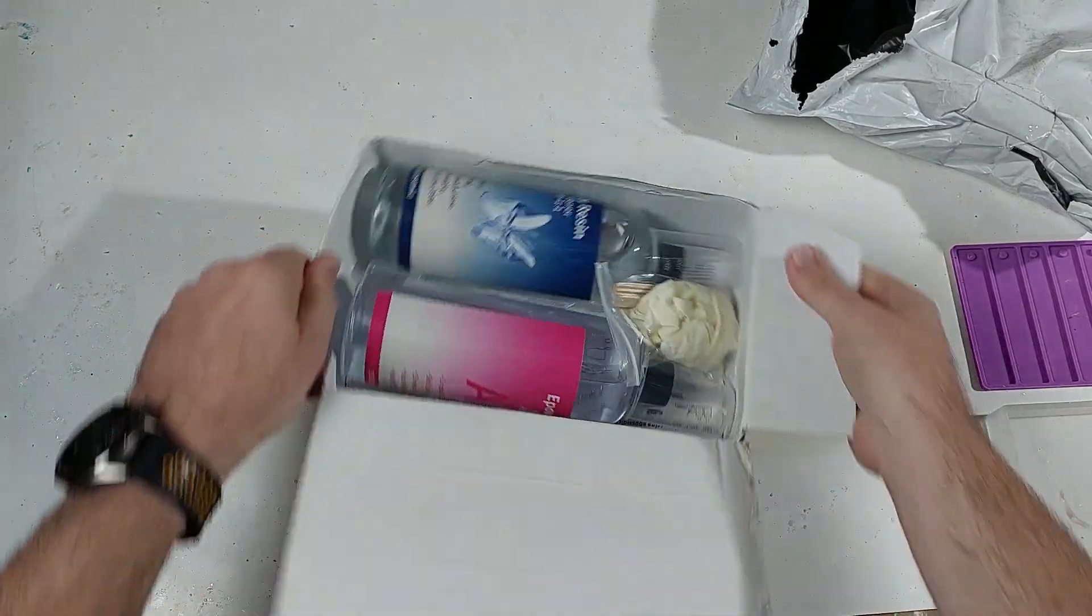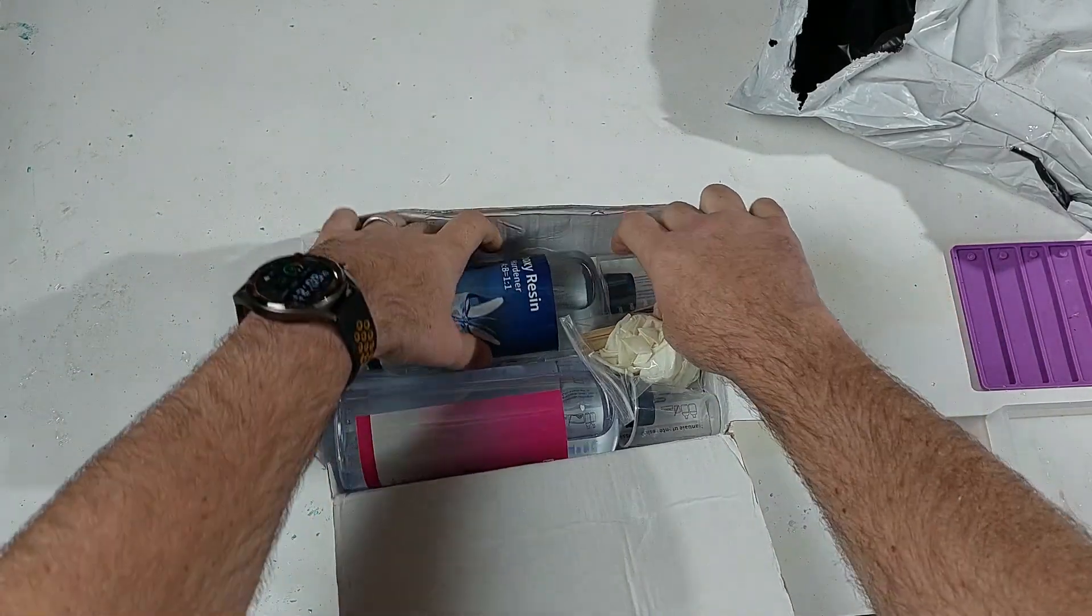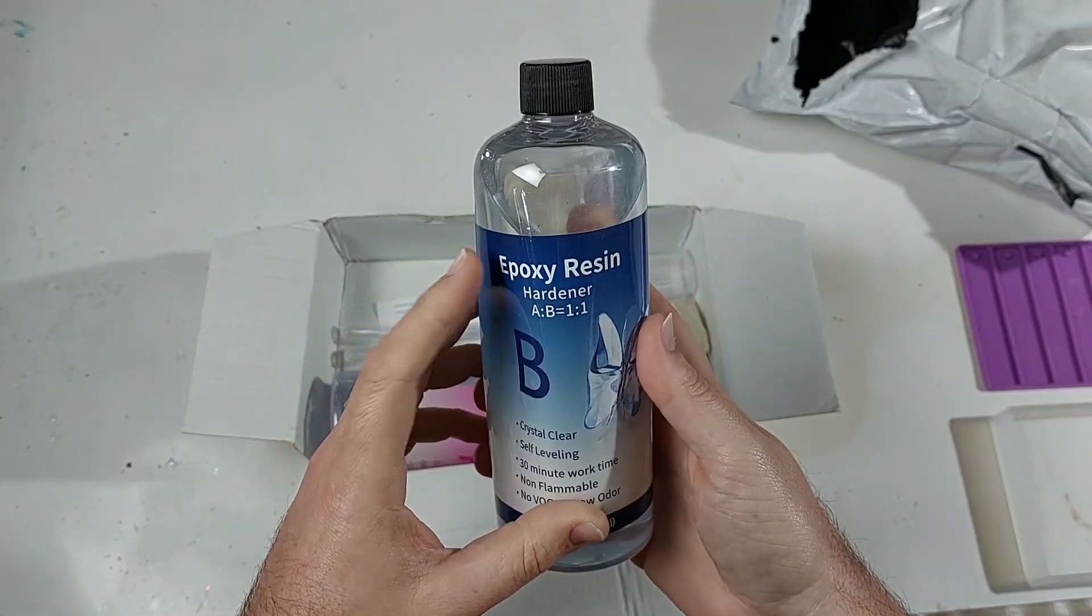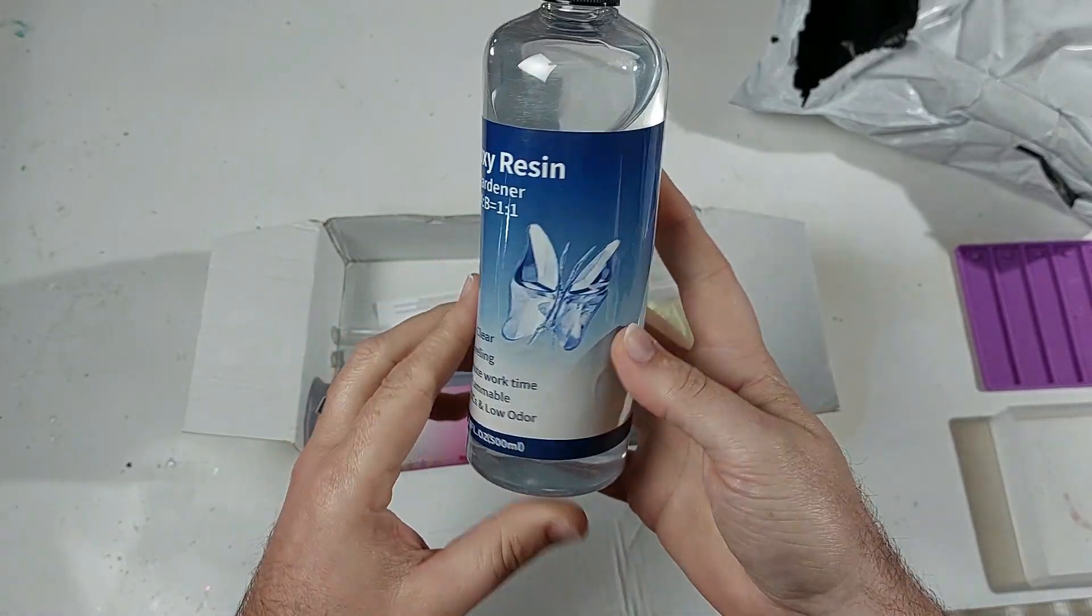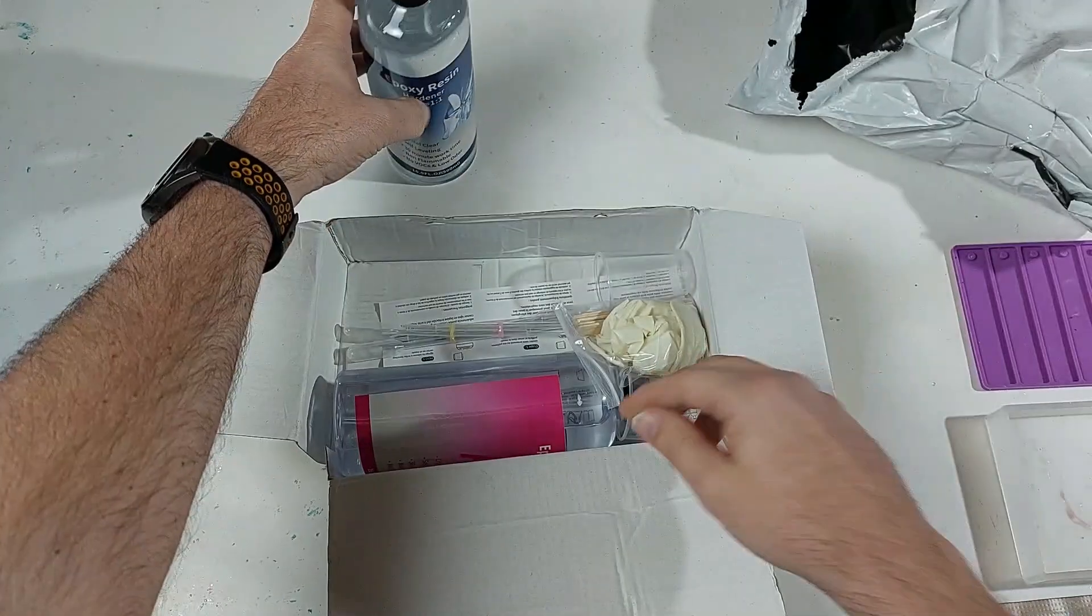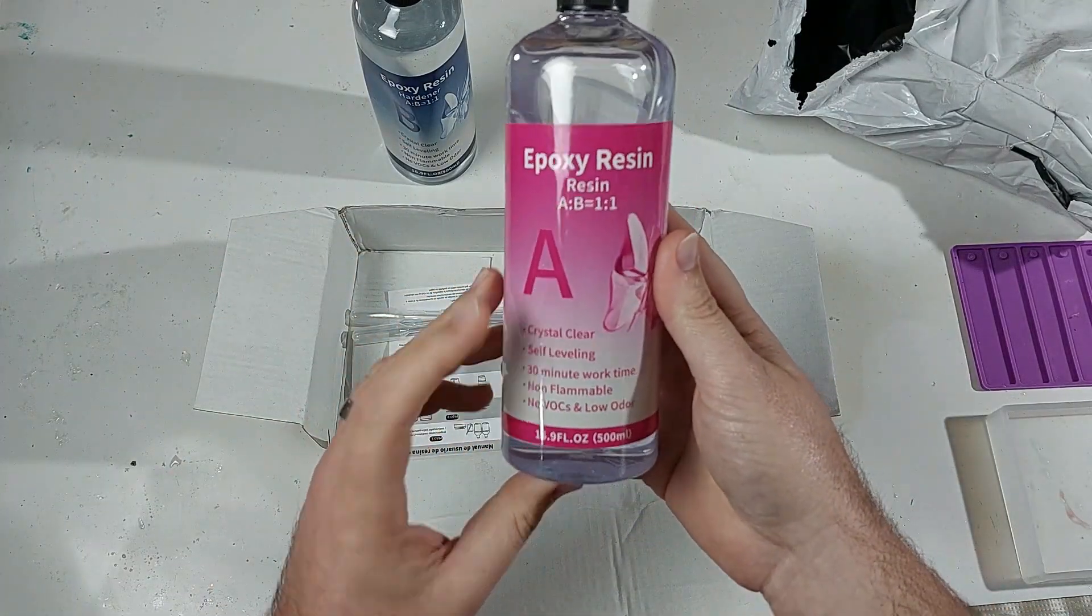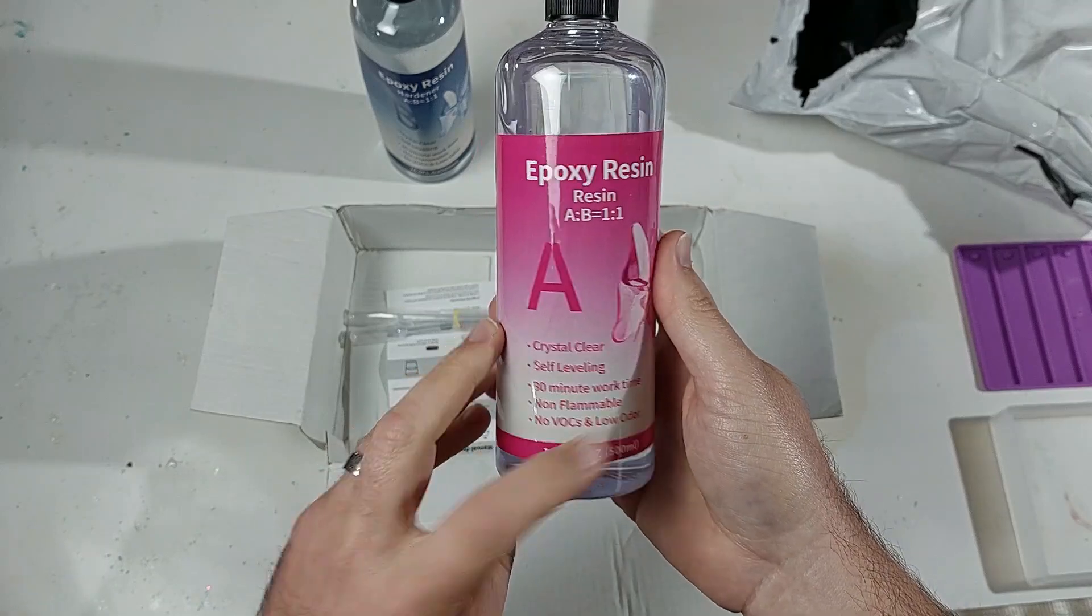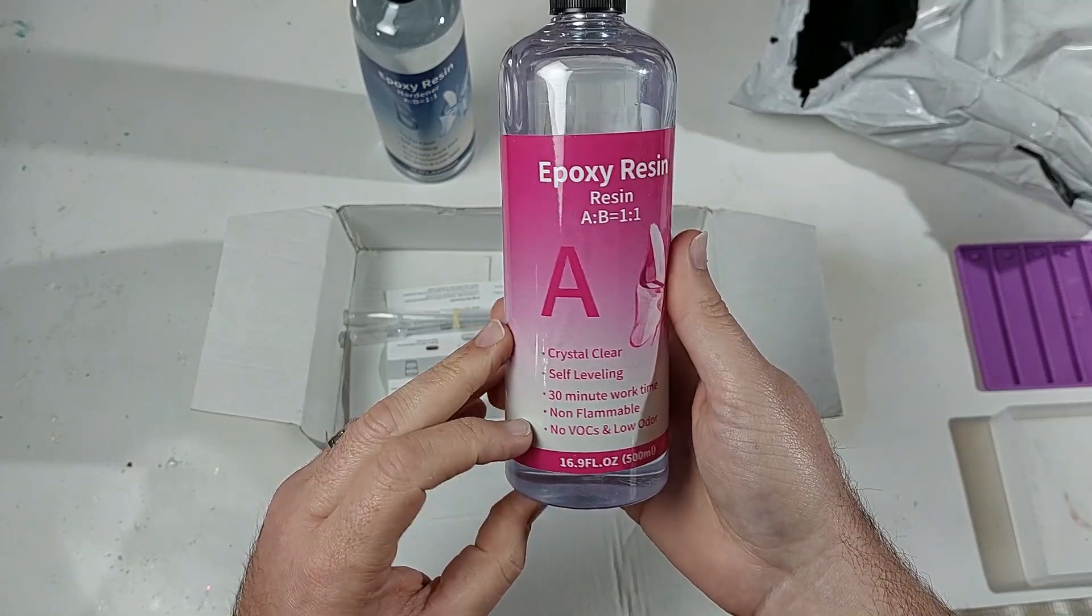And here it is in the kit. Comes with 500 mils of hardener and we've got 500 mils of the actual resin itself. 30 minute work time. It's supposed to be self leveling.